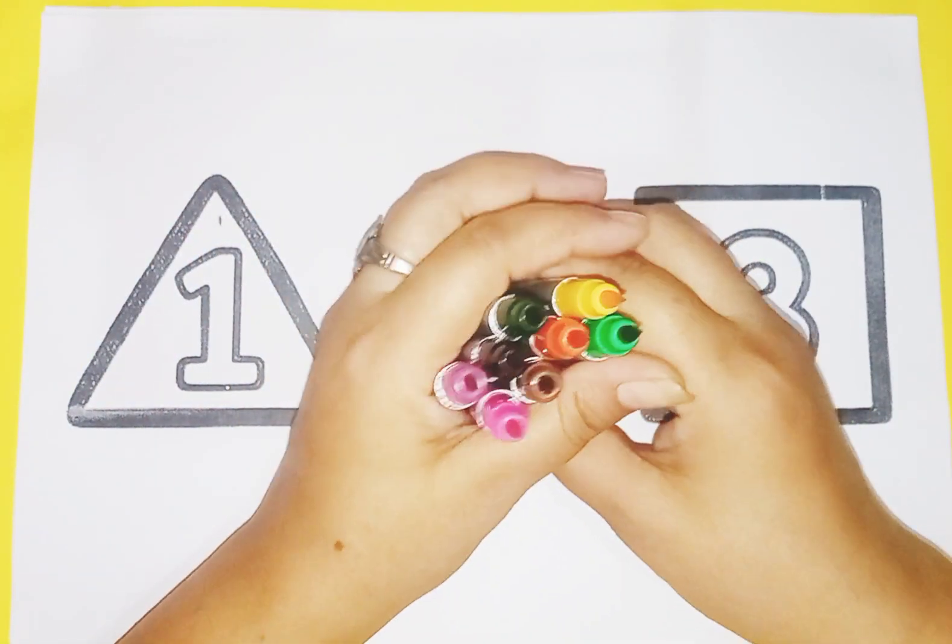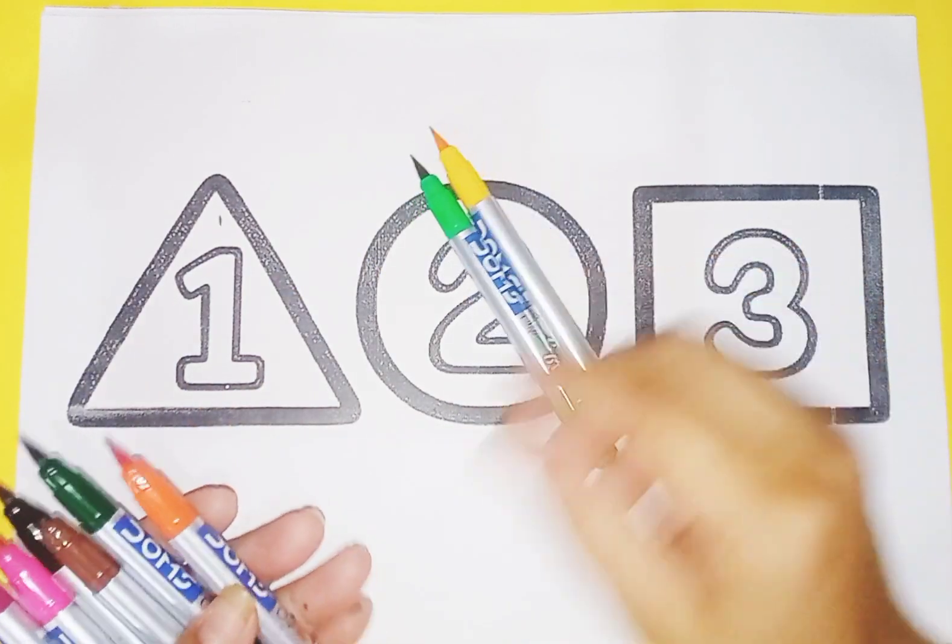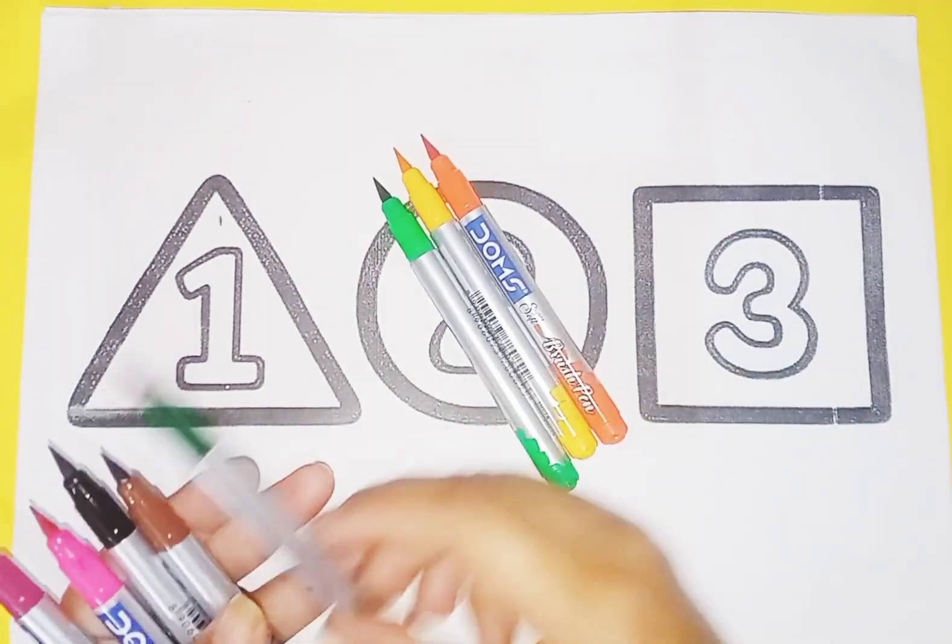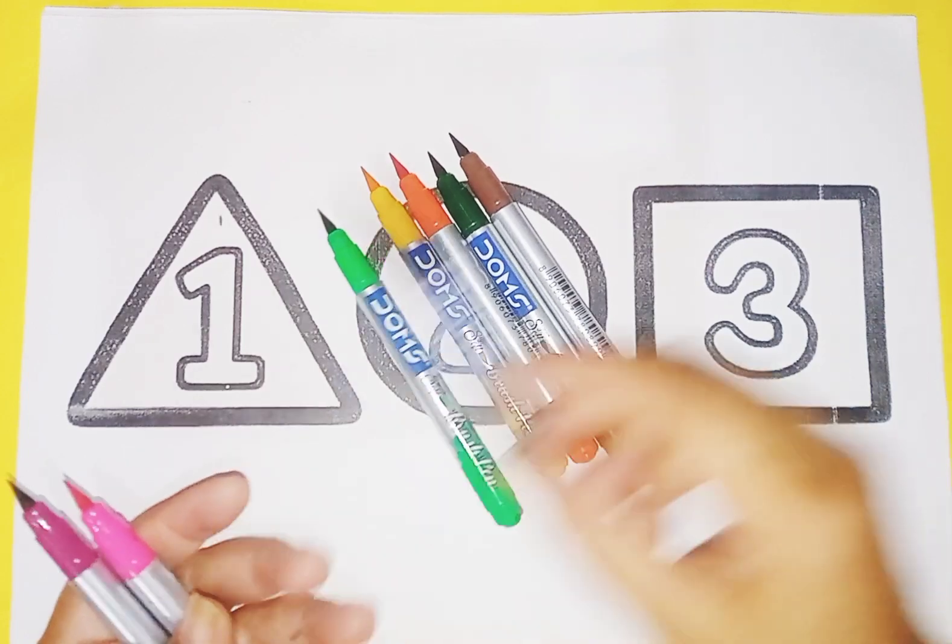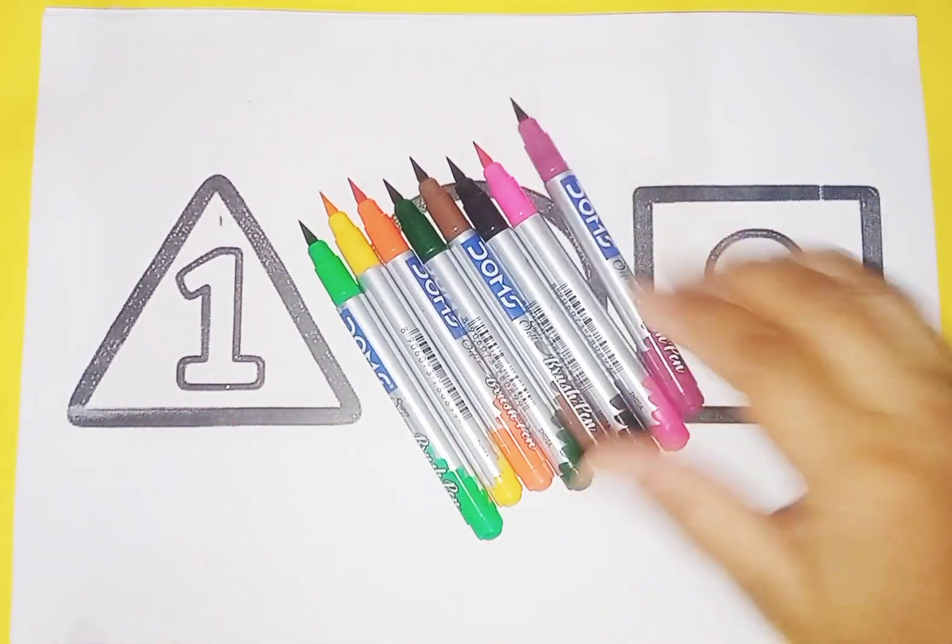These are colors. Green color, yellow color, orange color, dark green color, brown color, black color, pink color, white color.